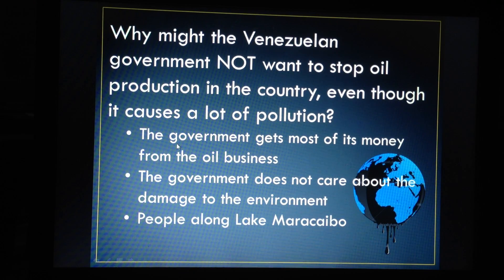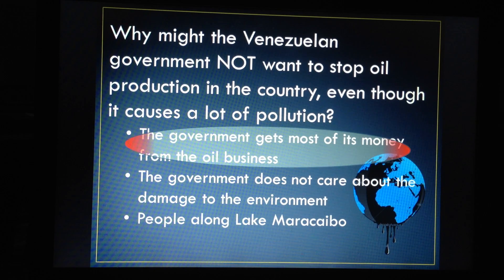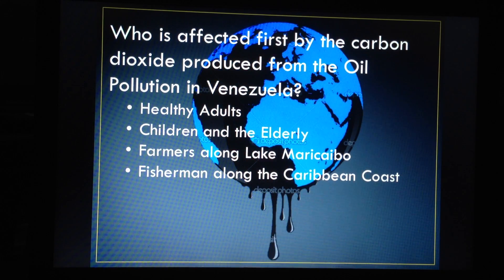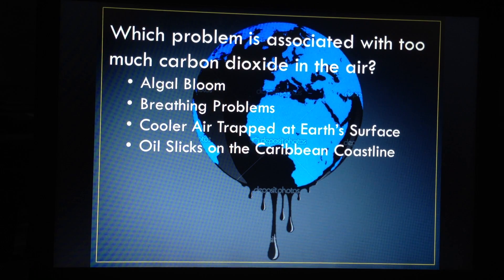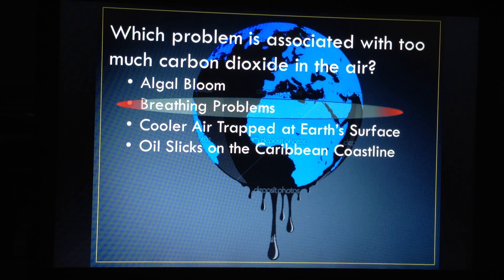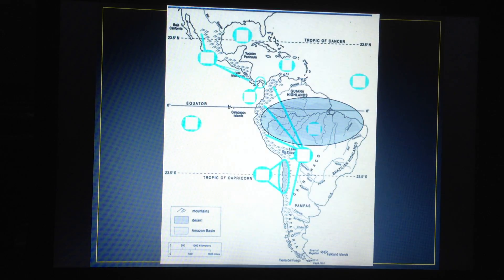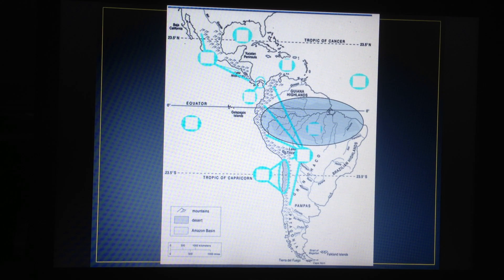The Venezuelan government would not want to stop oil pollution because that's where half of its money comes from — the oil business. Carbon monoxide affects children and the elderly first — they're the first ones impacted. And the problem associated with too much carbon dioxide is that you get breathing problems, as heard in the video.